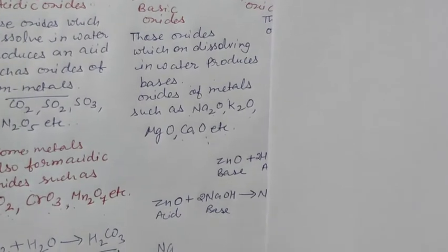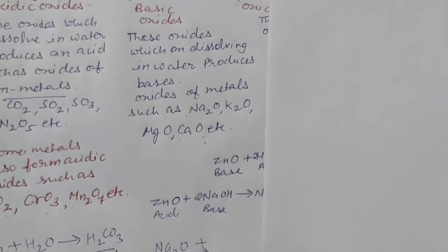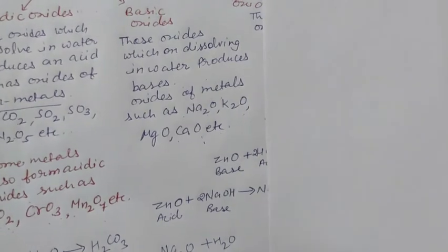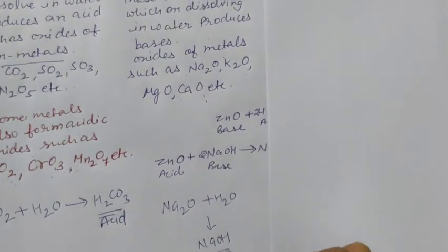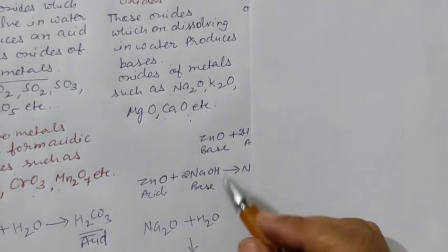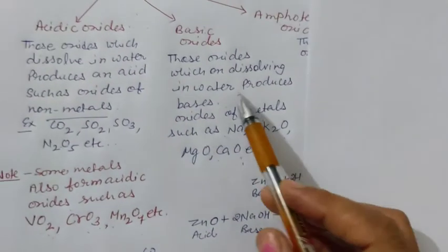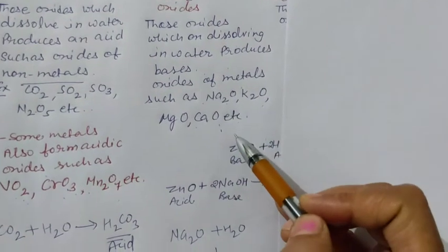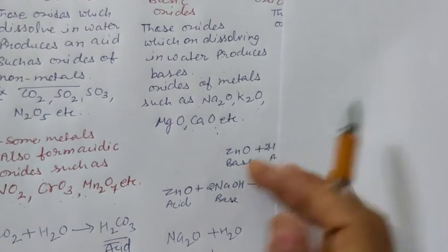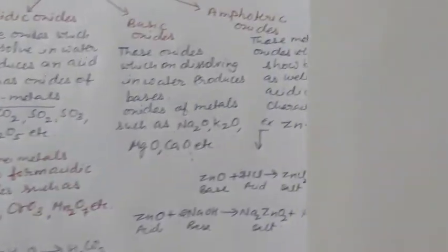when Na2O reacts with H2O, it forms NaOH which is a base. So these types of oxides are called basic oxides, and most of the metal oxides form bases on hydrolysis.